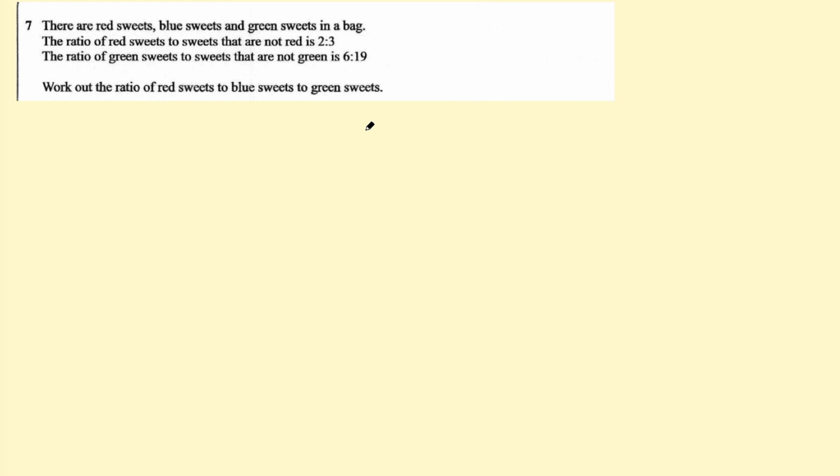I've talked about how you can represent problems in my exam walkthrough videos. You can use algebra and equations or graphs or pictures. The first thing I want to do here is to represent these statements with equations. We've got red, blue, and green sweets. So we could say red to blue plus green equals the ratio two to three. Then the second one says green to not green. Here we could say red plus blue equals six to 19.